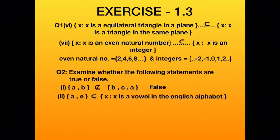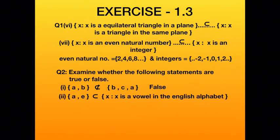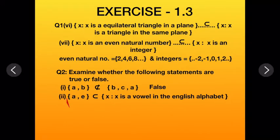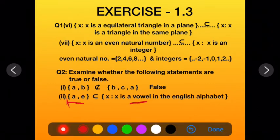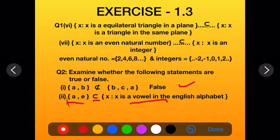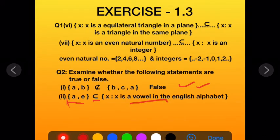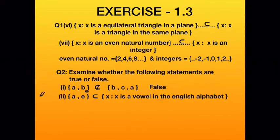Second part: {a, e} is a subset of {x : x is a vowel in the English alphabet}. The second set contains a, e, i, o, u — all vowels. The first set {a, e} are vowels and are included in the second set. So this statement is true.